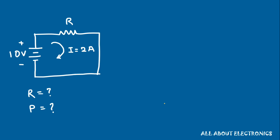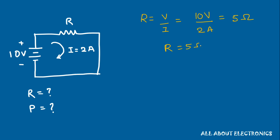Let's take an example: we have a 110V voltage source connected to an unknown resistor R, and the current flowing is 2A. We need to find the resistor value and the power dissipated. According to Ohm's law, R = V/I = 10V/2A = 5 Ohm. The power P = V × I = 10 × 2 = 20W.